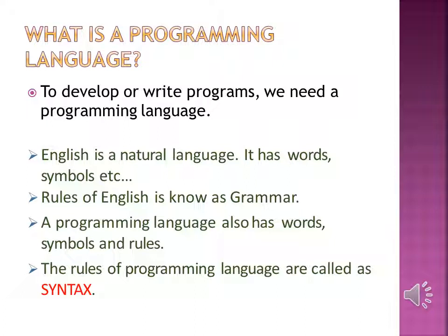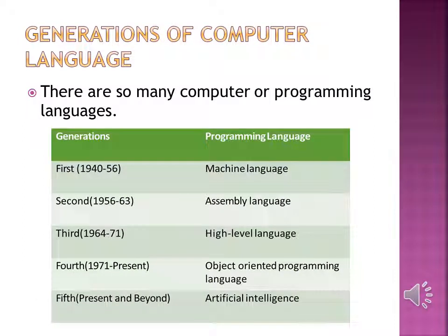The rules of a programming language are called syntax. The rules of English are called grammar, the rules of Hindi are called vyakaran, and the rules of a programming language are known as syntax. Computer languages can be categorized into different generations. There are five generations: the first generation is machine language, second is assembly language, third is high-level language, fourth is object-oriented programming language, and the fifth generation is artificial intelligence.